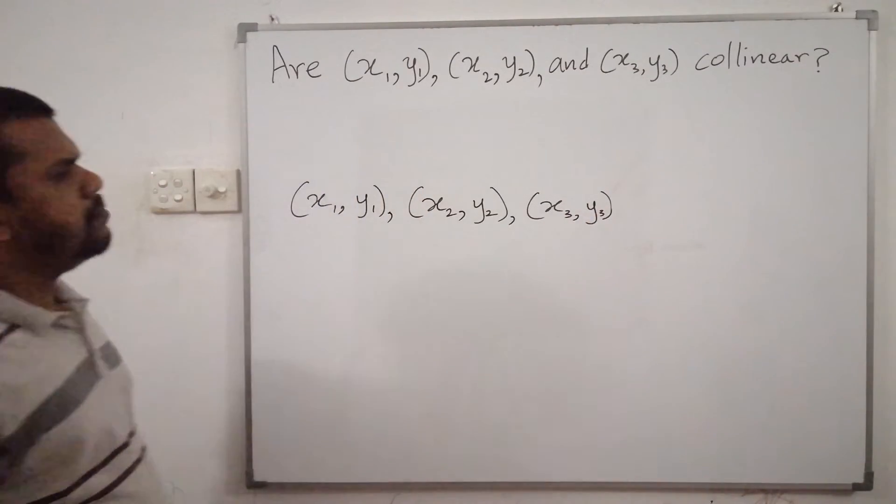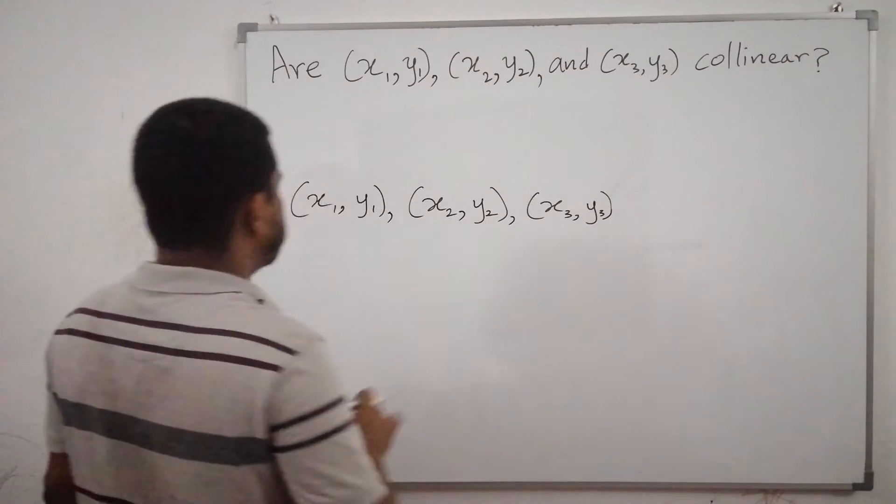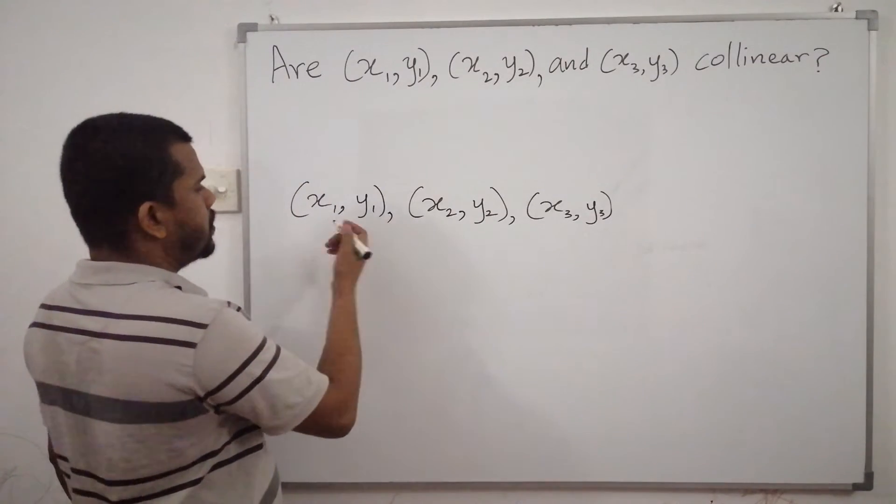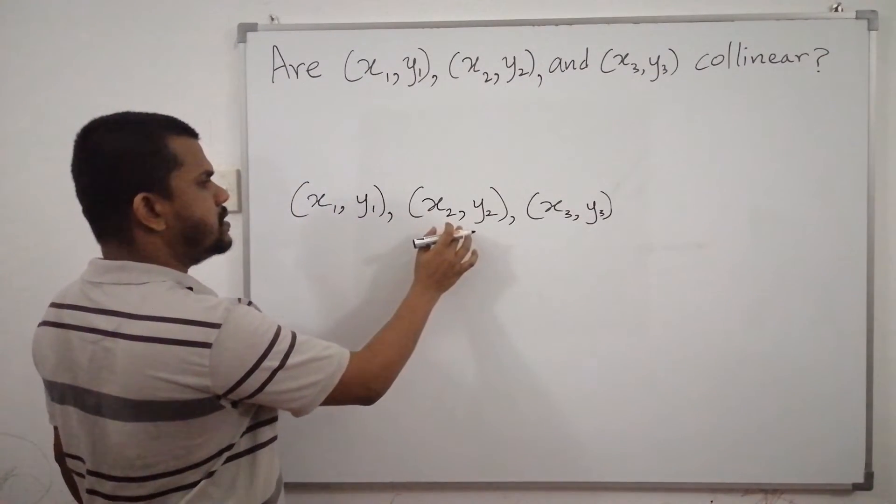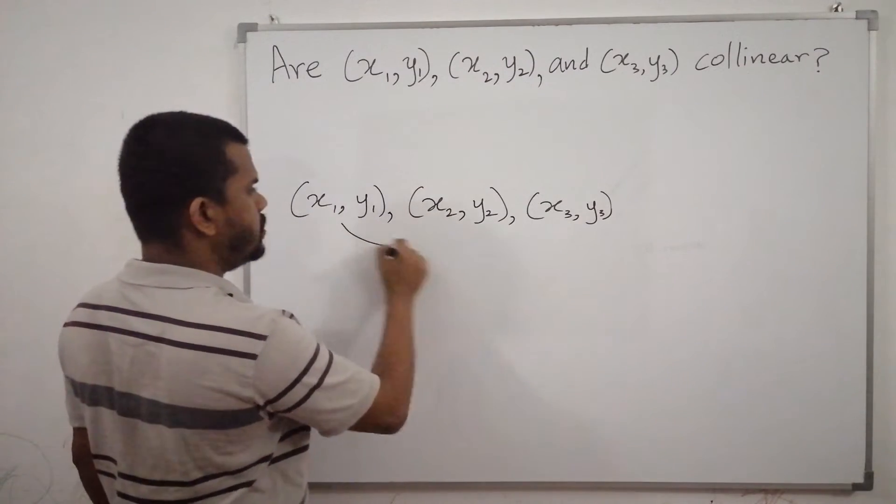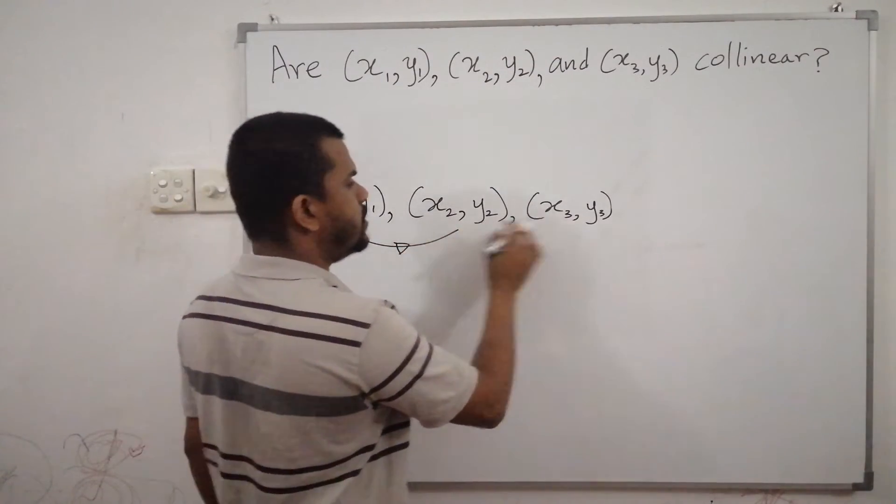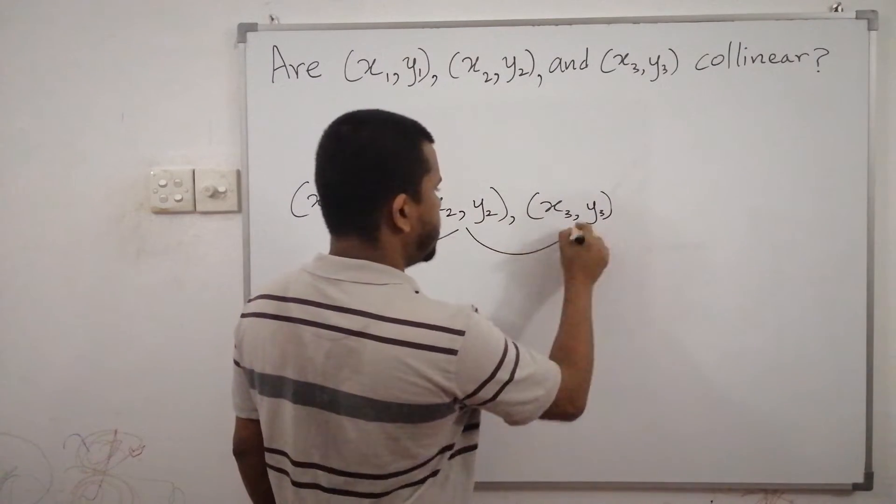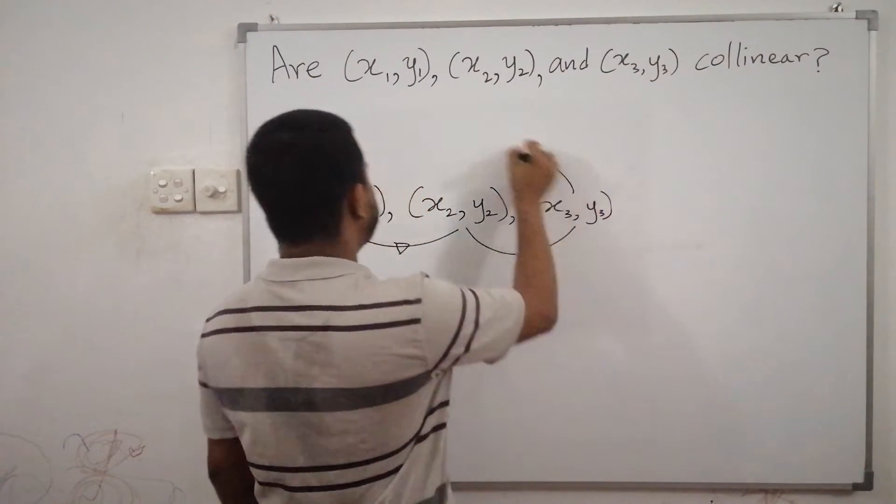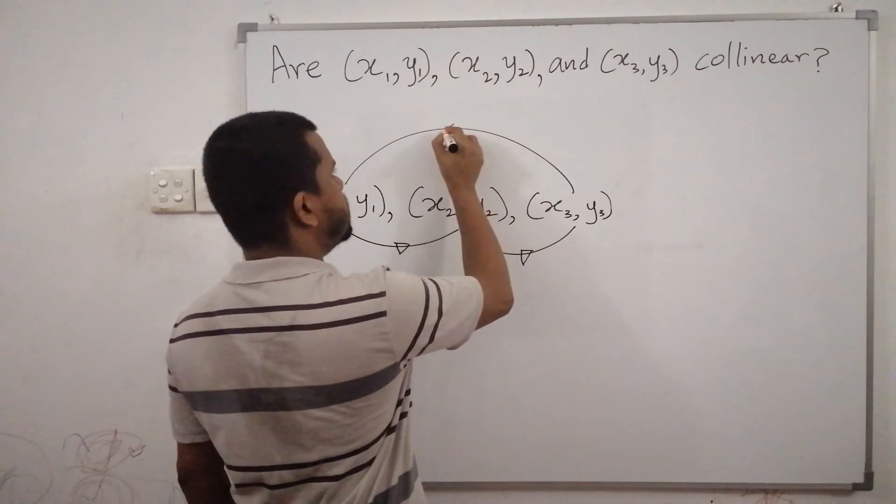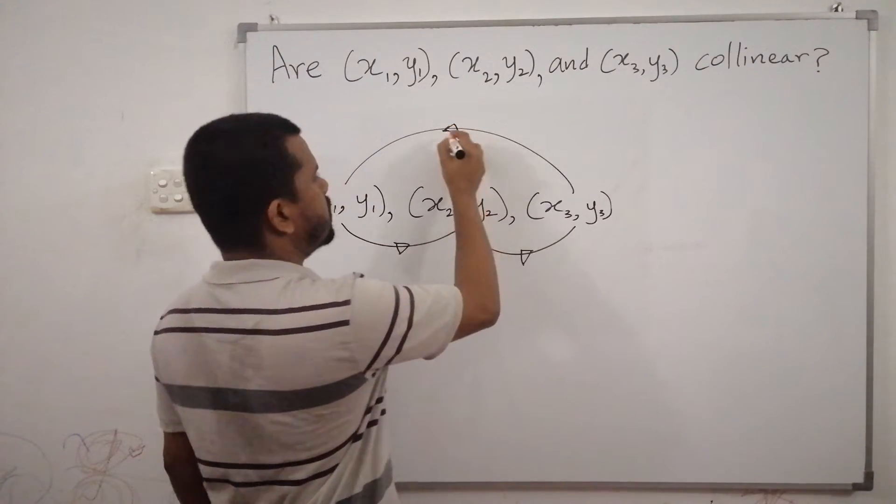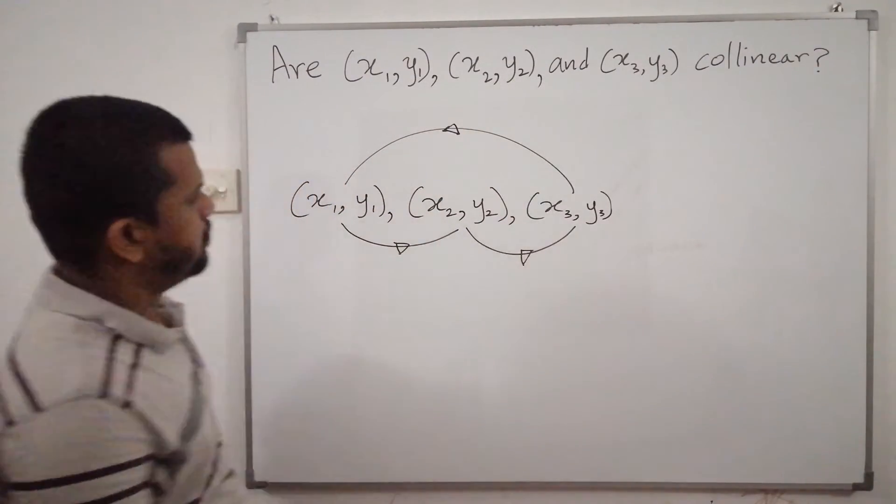Now, I'm going to write an expression. So I connect first point and second point using an arrow and then second point and third point using an arrow, again third point and first point using an arrow in this way.